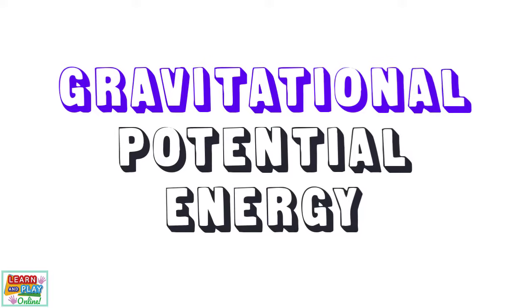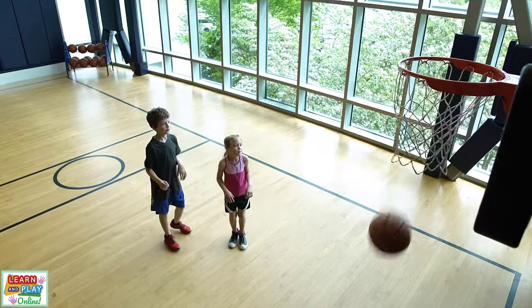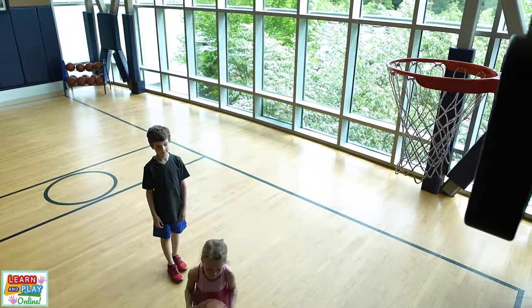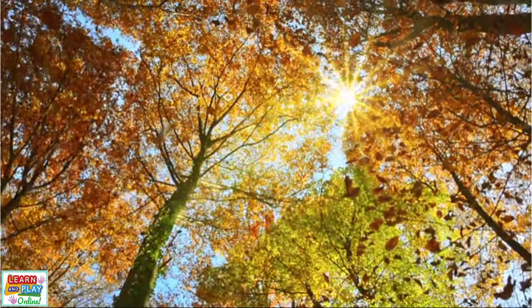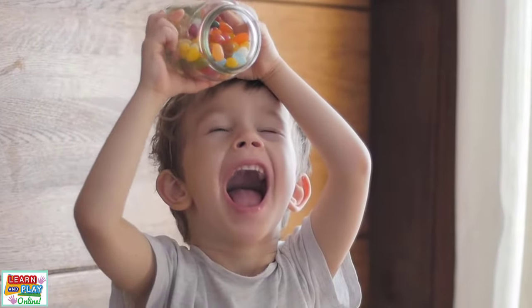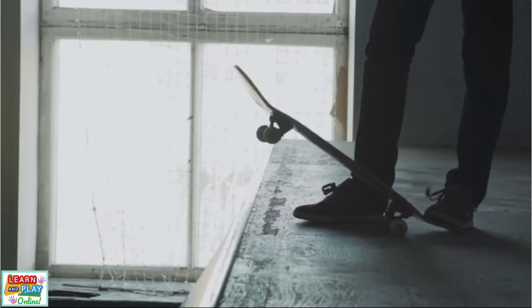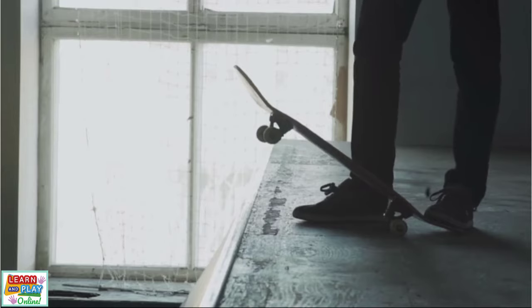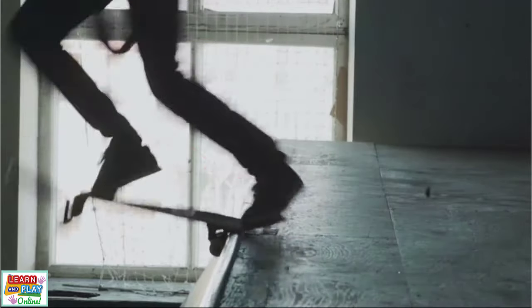Now let's explore the last form of potential energy for today, which is gravitational potential energy. As the saying goes, what goes up must come down. This is made true because of the law of gravity that we have here on Earth. There is a gravitational attraction towards Earth's centre, which is why objects will always fall down naturally and hit the ground. That means that if an object possesses gravitational potential energy, it is positioned in a way that if it is moved, it will be moving against the gravitational force and fall in a downwards direction.